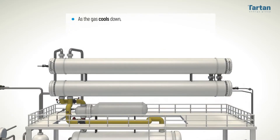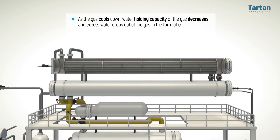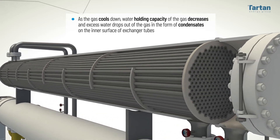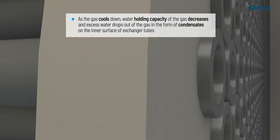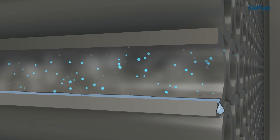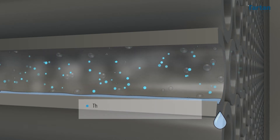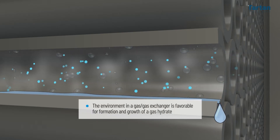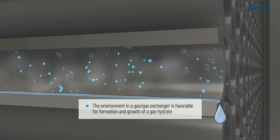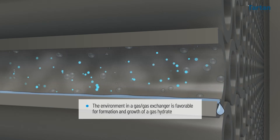As the gas cools down, the water holding capacity of the gas decreases and excess water drops out of the gas in the form of condensates on the inner surface of the exchanger tubes. As previously discussed in the section on hydrate formation, the environment in a gas-gas exchanger is favourable for formation and growth of a gas hydrate.